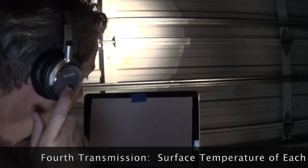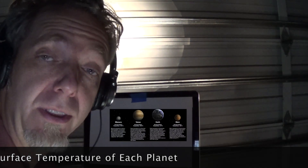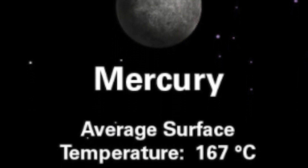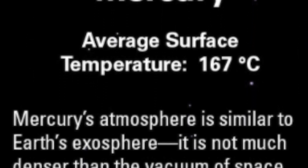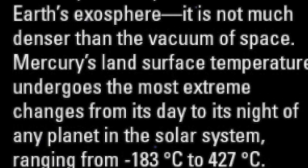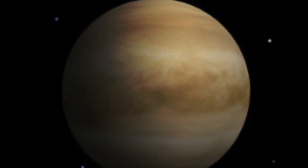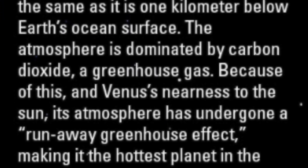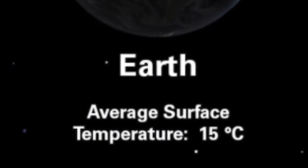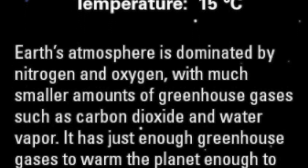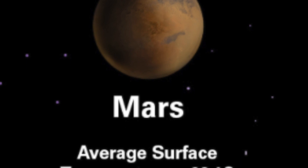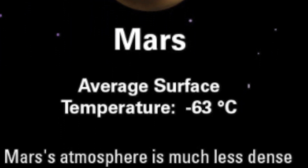We're getting our final transmission. Let's check it out. This transmission is about the average surface temperature of each planet. Mercury's average surface temperature is 167 degrees Celsius. Venus's average surface temperature is 464 degrees Celsius. Earth's average surface temperature is 15 degrees Celsius. Mars's average surface temperature is negative 63 degrees Celsius.